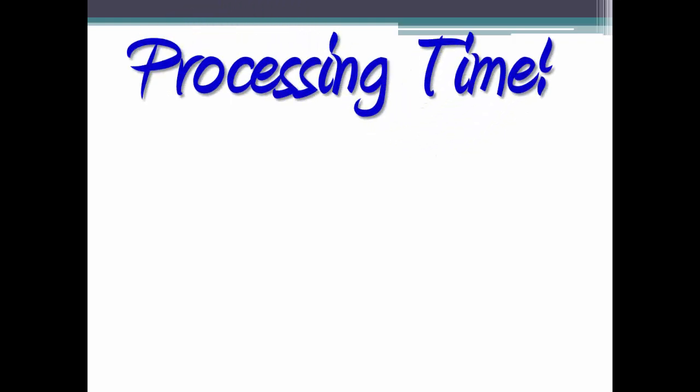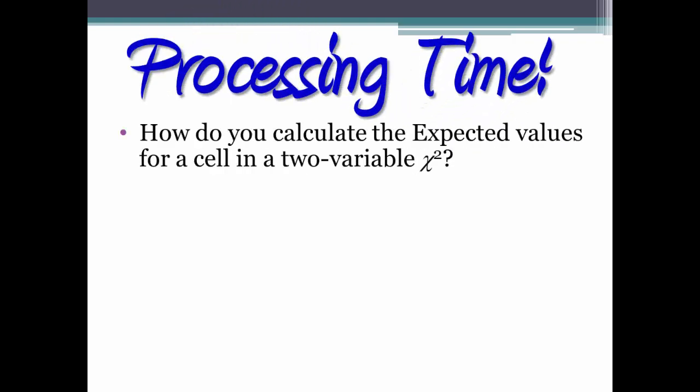Processing time, how do you calculate the expected values for a cell in a 2-variable chi-square? Remember, for each cell, you multiply the row sum by the column sum and divide that product by the grand total.